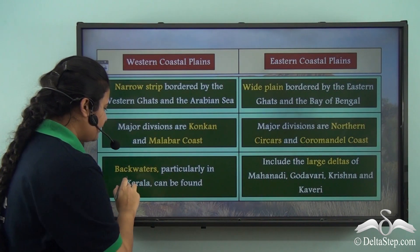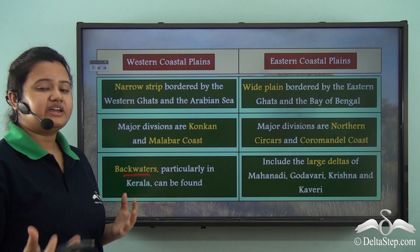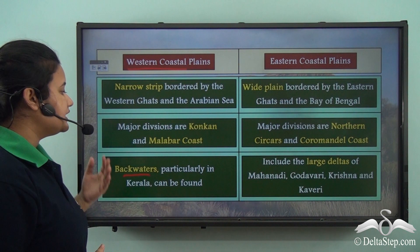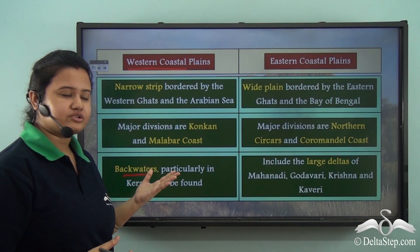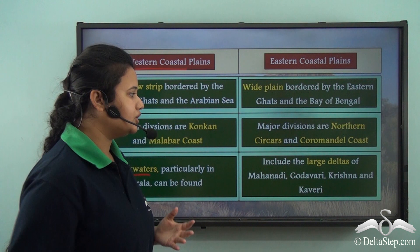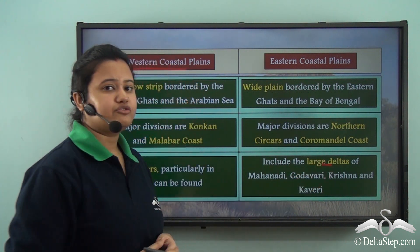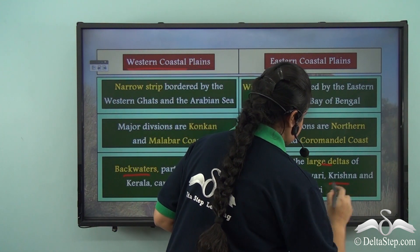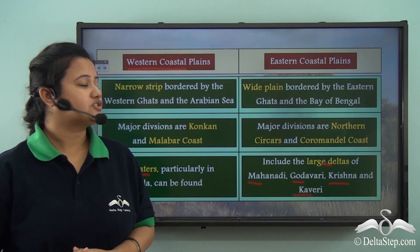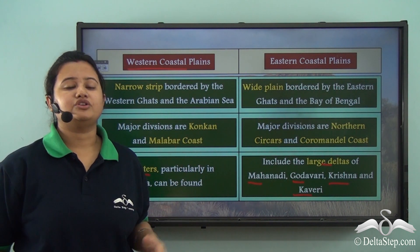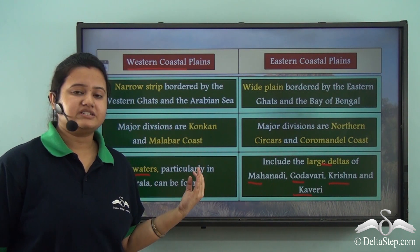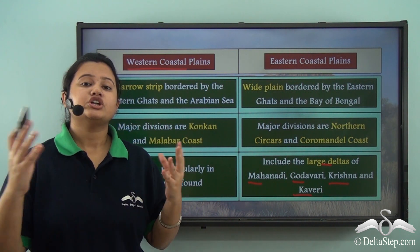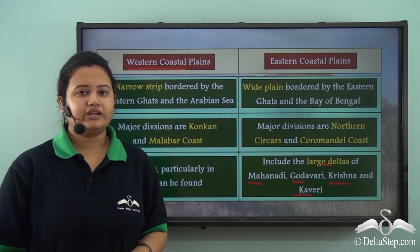The backwaters of Kerala, which are very famous, are part of the western coastal plain. Conversely, the eastern coastal plain includes large deltas formed by peninsular rivers like Mahanadi, Godavari, Krishna, and Kaveri. These are the major points of distinction between the western and eastern coastal plains, which together comprise the coastal plains of India.